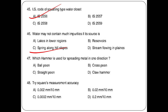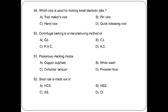Which hammer is used for spreading metal in one direction? Options: ball pin, cross pin, straight pin, claw hammer. The answer is option B: cross pin hammer. Tri-square measurement accuracy is 0.002 mm per 10 mm. Which vise is used for holding a small diameter job? Options: pin, hand, quick releasing. The answer is option B: pin vise.